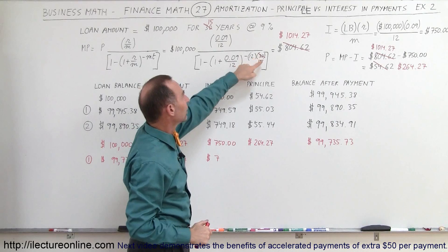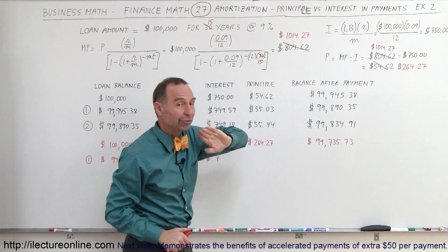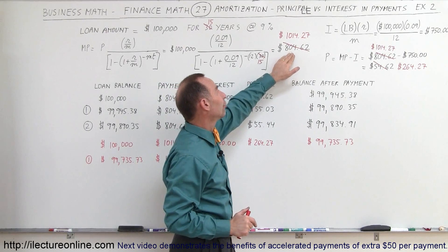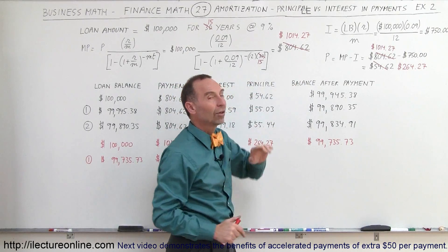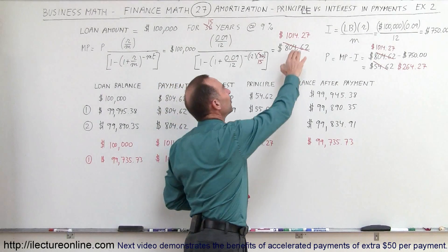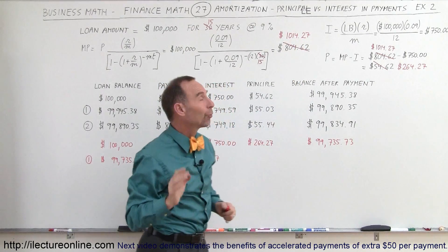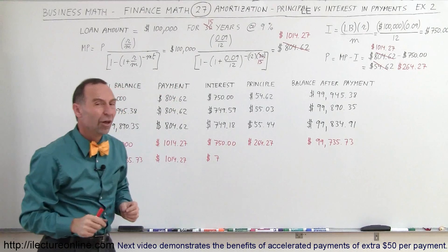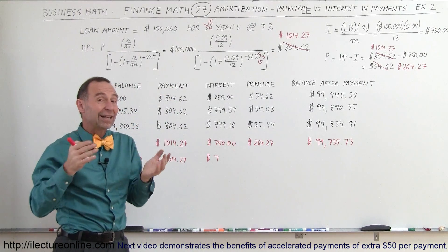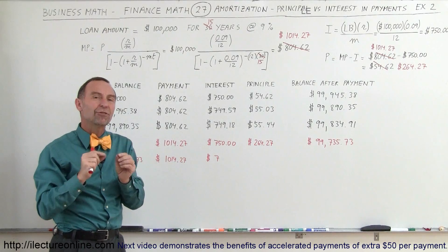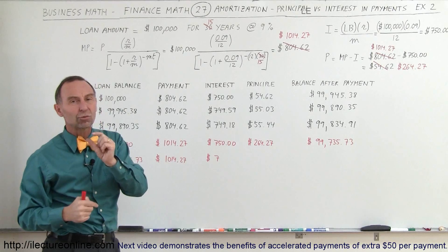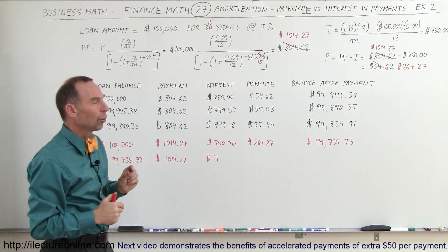The only difference is instead of 30 years we have a 15-year loan, and so therefore instead of having 360 payments at $804.62, we now have a payment of $1,014.27. One thing that should jump right out is when interest rates are relatively high like at 9%, the monthly payment difference between a 30-year loan and a 15-year loan is not as great as when interest rates are smaller and lower.